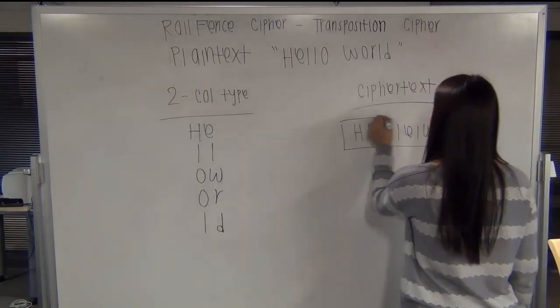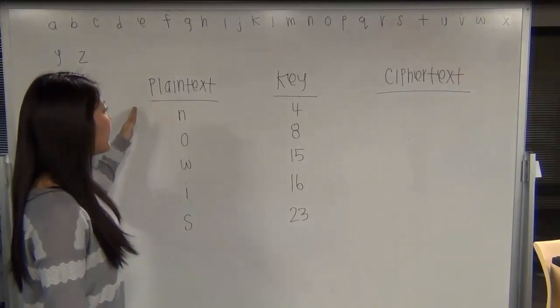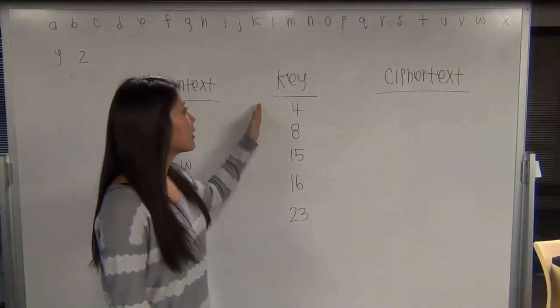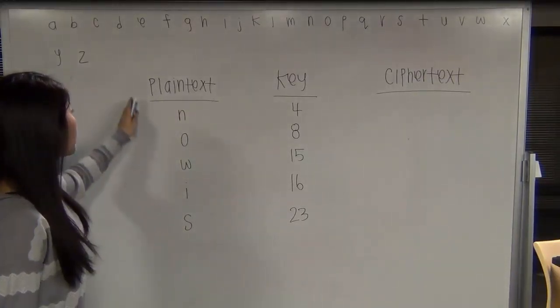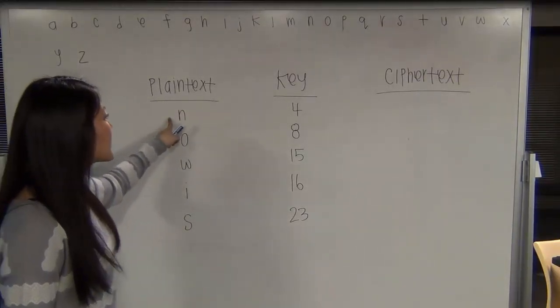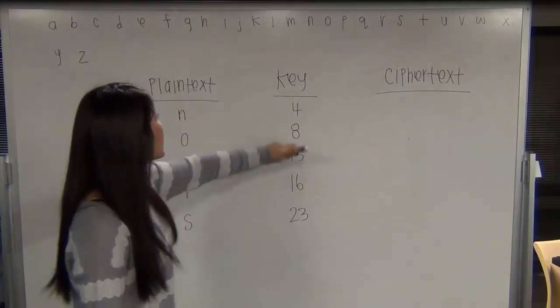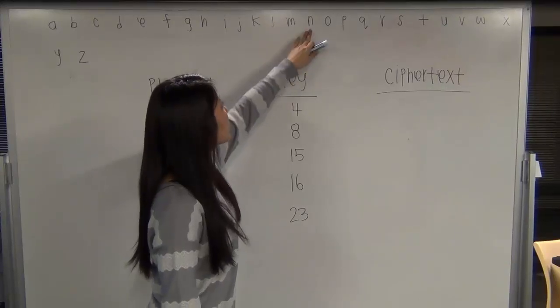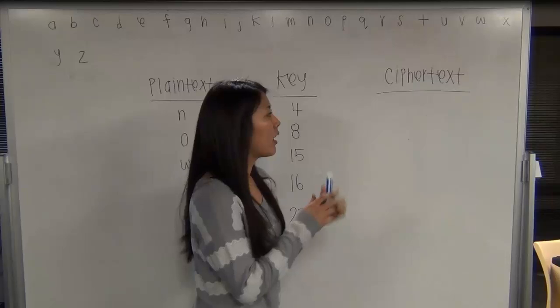So here you have your plaintext and your key and then your ciphertext. So your first plaintext is N and your first key is 4. So what you're going to want to do is go to the letter N and then since your key size is 4, move down 4: 1, 2, 3, 4. So you get R.